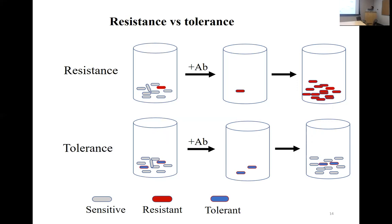When tolerant cells survive the treatment and multiply, they still produce a population that is a combination of sensitive and tolerant cells. If they survive treatment they can come back and cause disease again. This is a problem in clinical microbiology. The tolerant cells are actually dormant cells — once antibiotics are gone they start dividing and produce a new mixed population. This is an issue particularly with gram-positive bacteria, where spores obviously tolerate treatments.